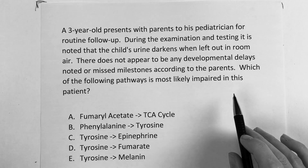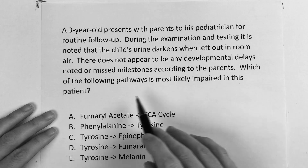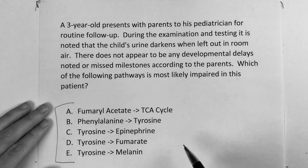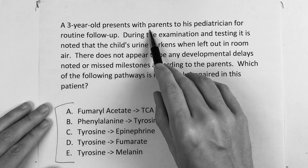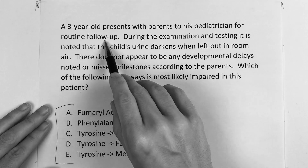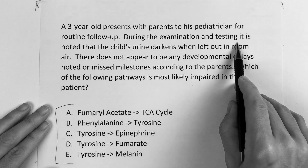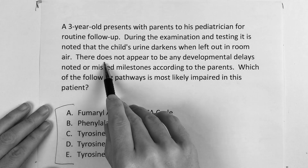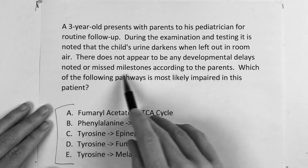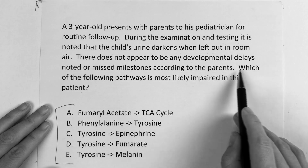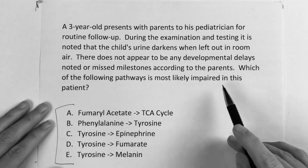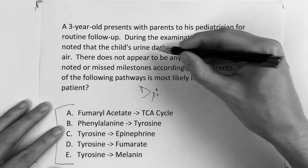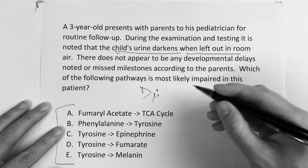All right, guys, it says: which of the following pathways is most likely impaired in this patient? It looks like a biochemistry-type question. A three-year-old presents with parents to his pediatrician for routine follow-up. During the examination and testing, it is noted that the child's urine darkens when left out in room air. There do not appear to be any developmental delays or missed milestones according to the parents. The giveaway on the diagnosis is that the urine darkens when left out in room air.